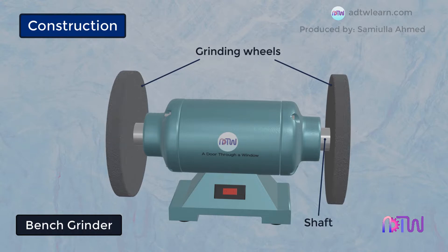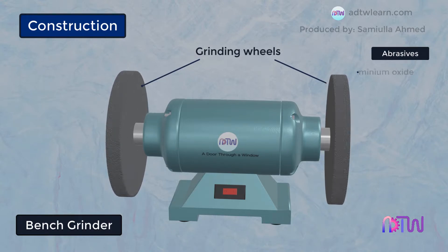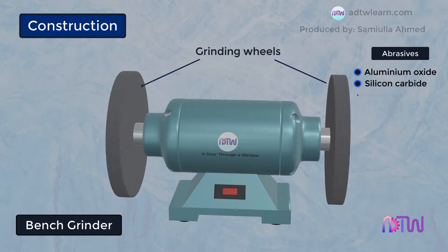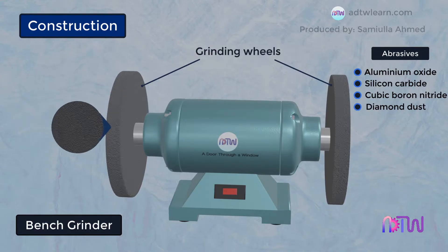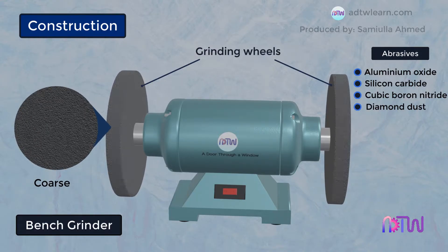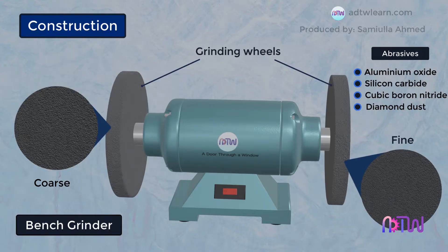These grinding wheels are made up of abrasive materials such as aluminium oxide, silicon carbide, cubic boron nitride, and diamond dust, chosen based on requirements. They also have different grits to serve different purposes. One of the wheels mounted on the shaft will have coarse abrasive grains, and the other will have fine abrasive grains.